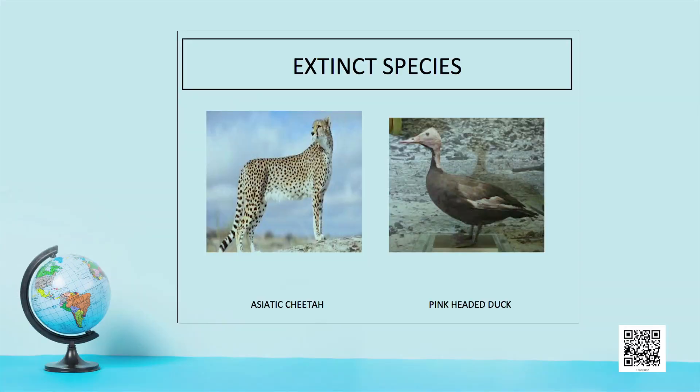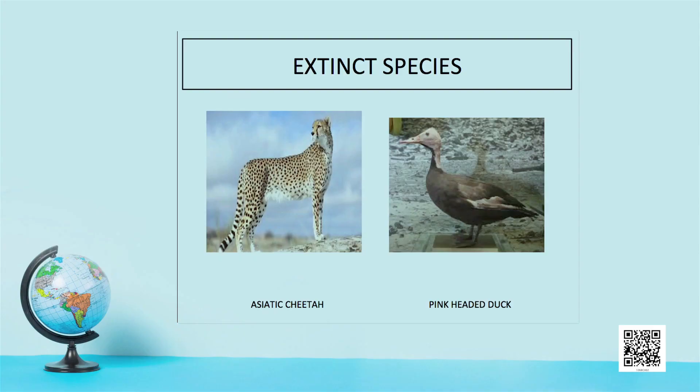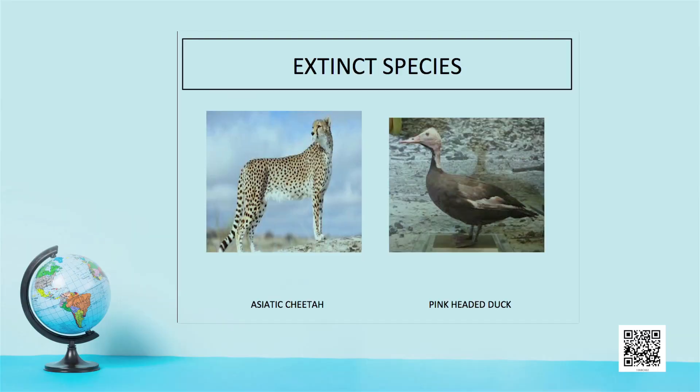Extinct species are those not existing for a very long time. A species becomes extinct when the last existing member dies and there are no surviving individuals able to reproduce. Reasons for extinction can be natural or anthropogenic, including lack of adaptation, climate change, loss of habitat, invasion by alien species, overexploitation, tourism, and encroachment. Examples include the Asiatic cheetah and pink-headed duck.